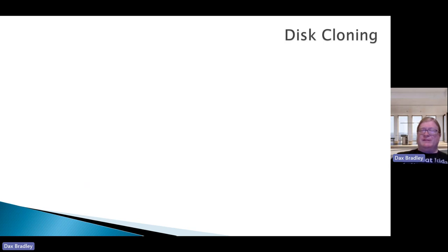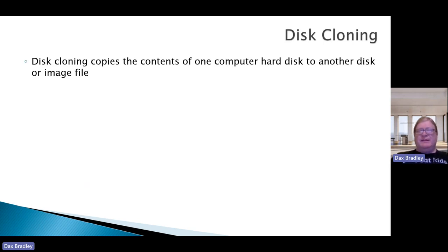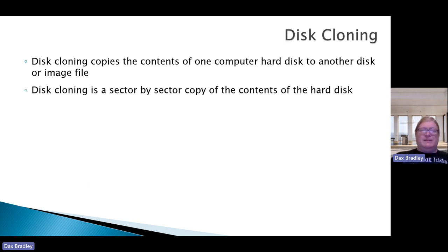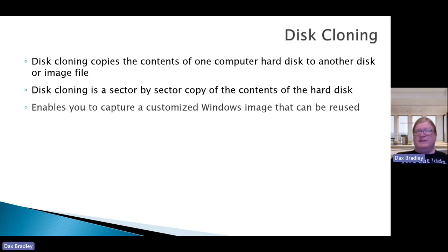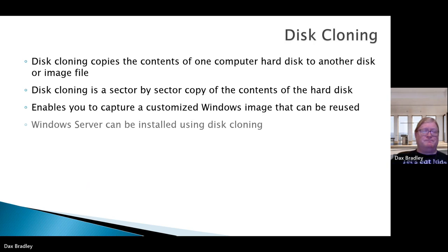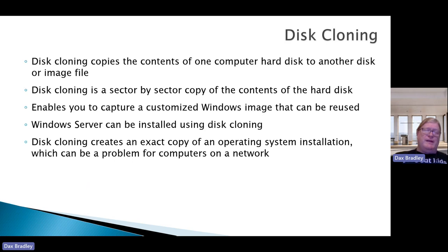One of the things at your disposal to create redundancy is disk cloning. Like the name implies, it takes the contents of the hard disk, creates a copy, and puts it on another disk or an image file like an ISO. Disk cloning is a sector-by-sector copy of the contents of the hard disk. It enables you to capture a customized Windows image that can be reused. The Windows Server can be installed using disk cloning, and disk cloning creates an exact copy of an operating system installation, which can be a problem for computers on a network.